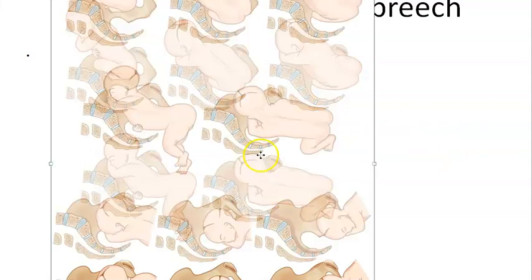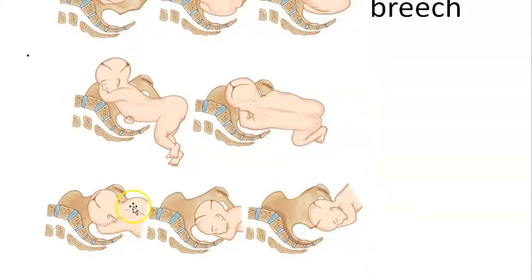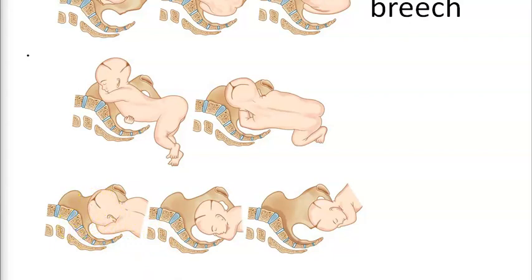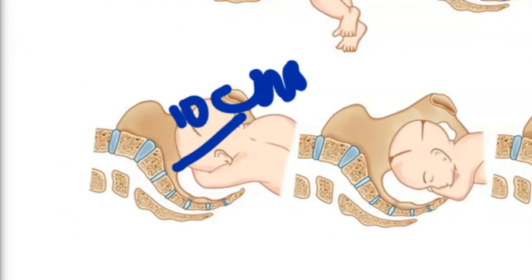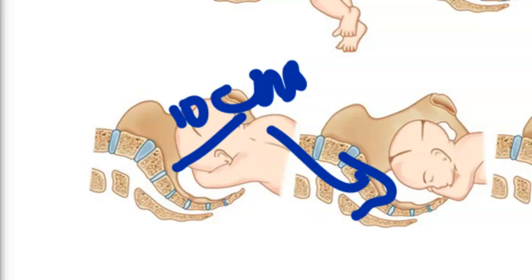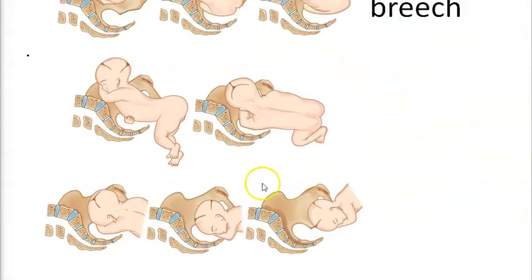Now let's talk about the head in the mechanism of labor in breech. Head engagement occurs with the sub-occipito-frontal diameter, which is around 10 centimeters. Then descent and increasing flexion occur, and further descent. The head is born by flexion — please note that.